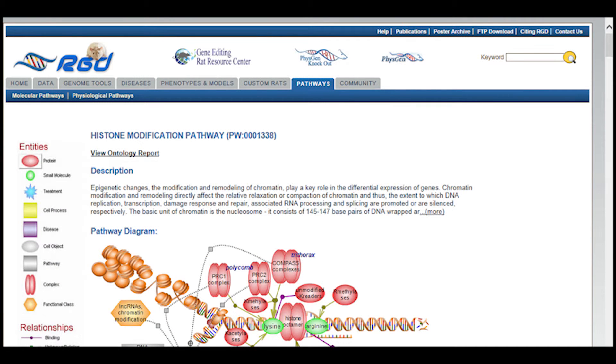On a final note, the histone modification pathway is part of two of RGD's pathway suite networks: the gene expression and regulation pathway suite network and the S-adenosylmethionine homeostasis pathway suite network.